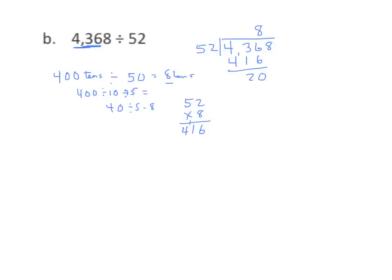We can't work with 20 tens, so we're going to change the 20 tens into 200 ones, and bring down our ones. We've now decomposed this to the ones place — I have 208 ones. I'll change that to 200 ones divided by 50, which equals 4 ones. Let's give it a shot: 52 times 4 equals 208. We'll record the 4 in the quotient in the ones place.